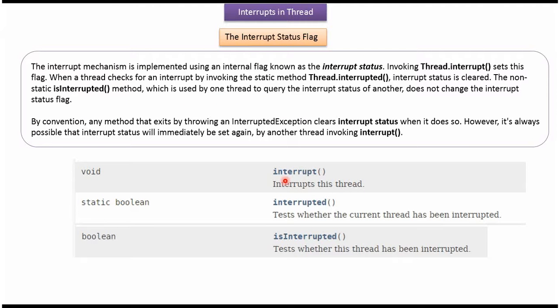Using the interrupt method, we can interrupt the thread. And once the interrupt method is called, there is one flag called interrupt status that will be set.